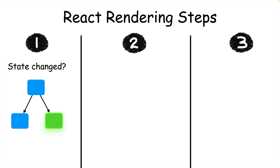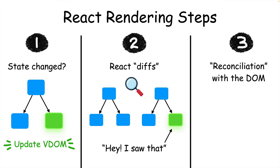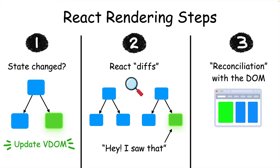Here's the complete rendering process in React. If the state of our React app changes, then React updates the virtual DOM, which is quicker to update than the real DOM. Then React uses a process called diffing to compare the updated virtual DOM to a previous version to see what's changed. Once it sees what's different, React uses a process called reconciliation to update the real DOM with the changes that it found.